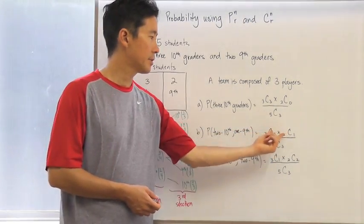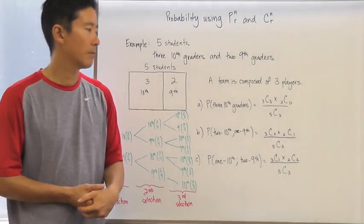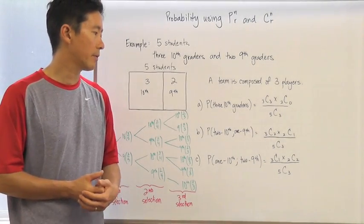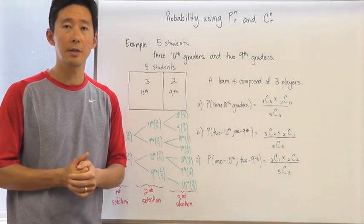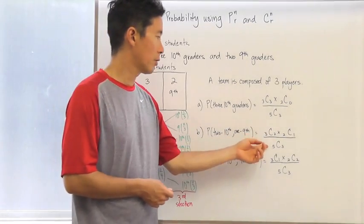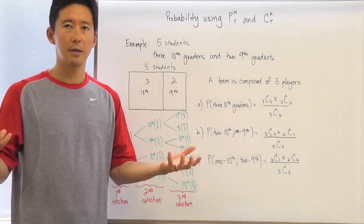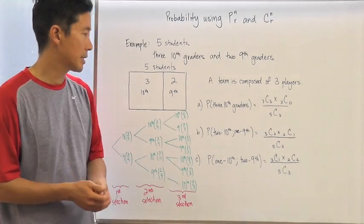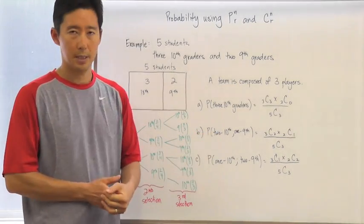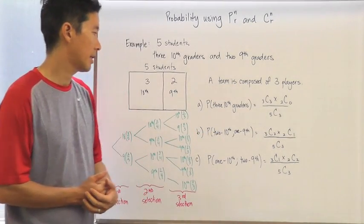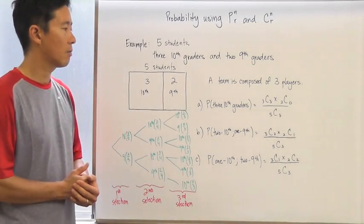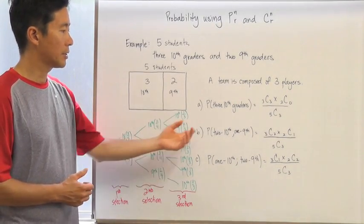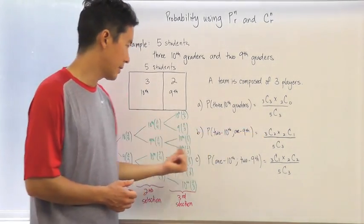Multiplying those two together gives the total number of combinations of getting two tenth graders and one ninth grader. Divided by C(5,3), the total ways of forming a team of three, I get the probability of choosing two tenth graders and one ninth grader.